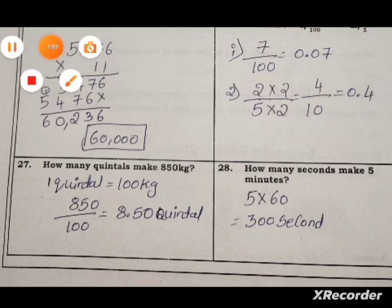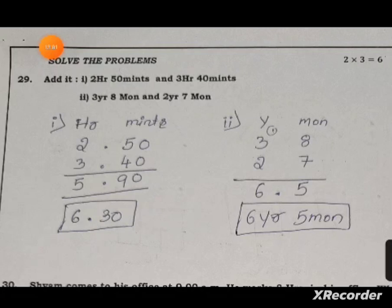Question twenty-nine: solve the time addition problems. Write hours and minutes in their respective places and add. Second part: write years and months in their respective places and add.